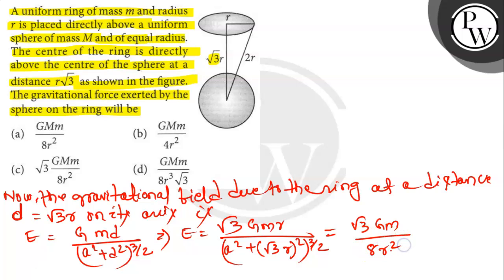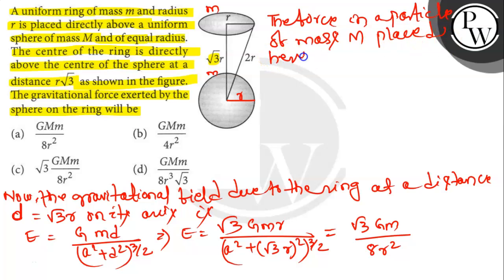So here let's say this is r and from this it will be also r. Here it is M, the distance is root 3 r, this is m, this is also mass m. So the force on a particle of mass M placed here.